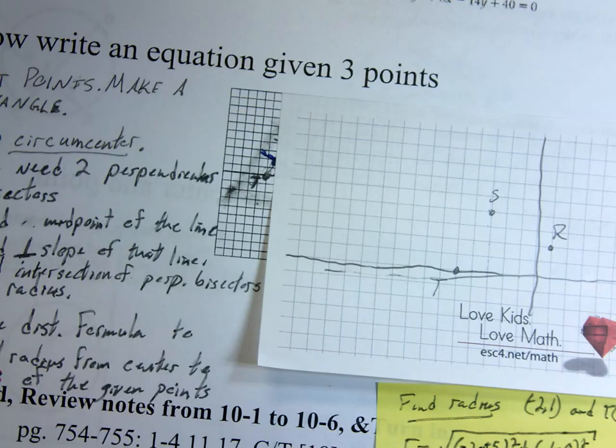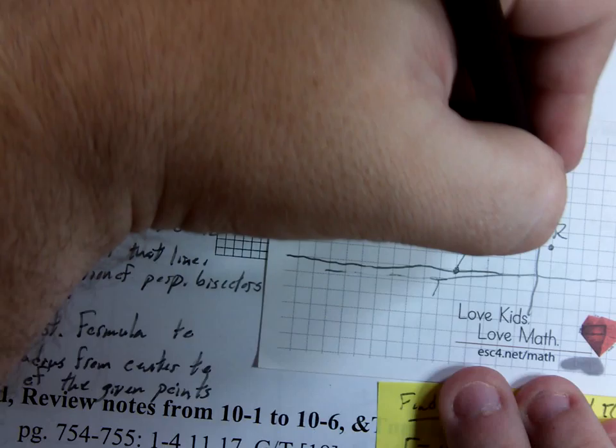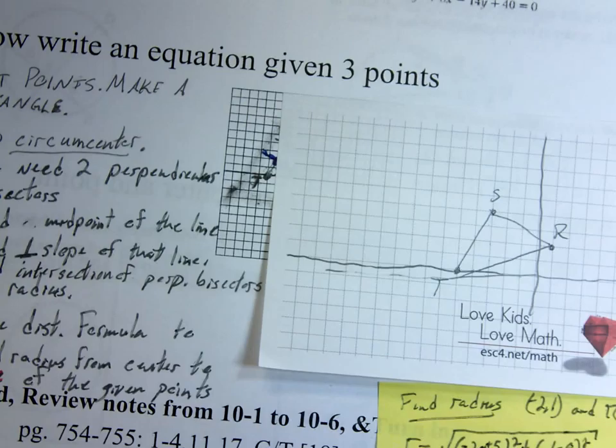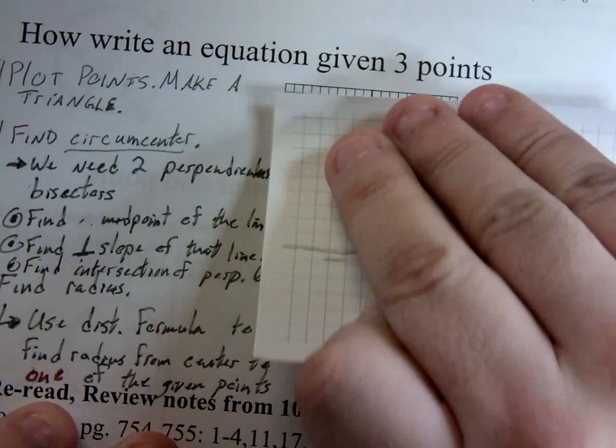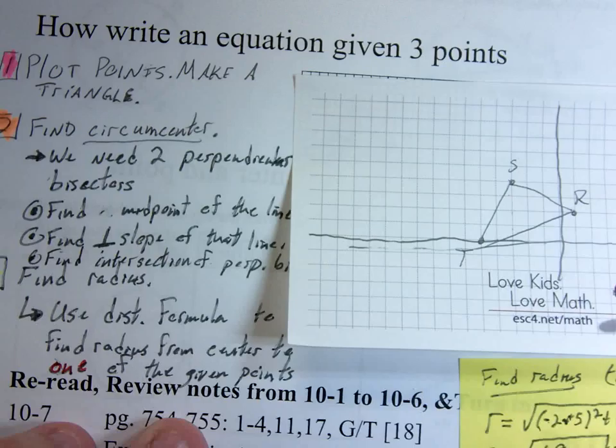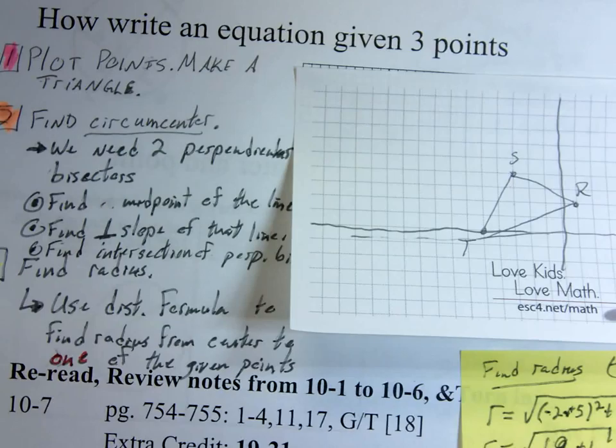We've got to find a center, which is going to be called the circumcenter of those three points. So next, we just make this into a triangle. Would you please make a triangle out of those three points? Let me pull this over a bit more so we can see our notes. Close enough.